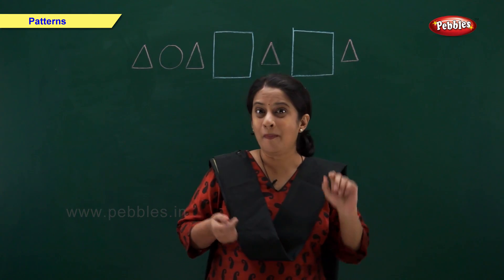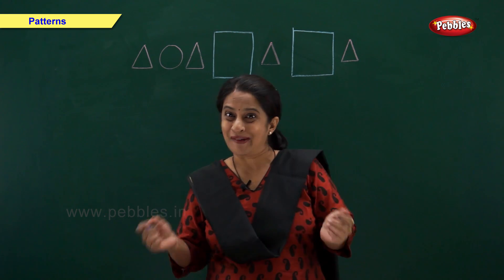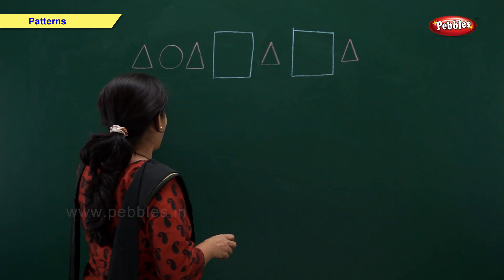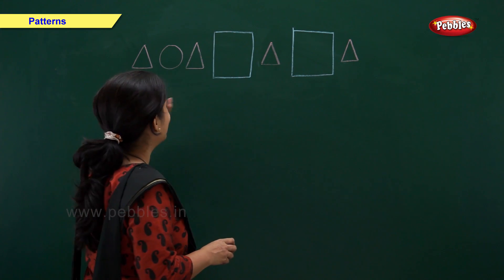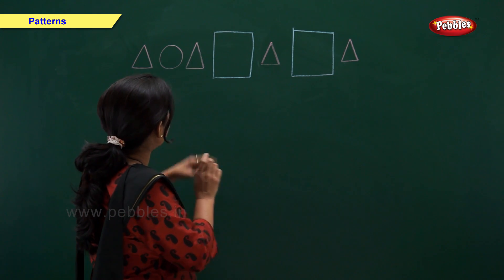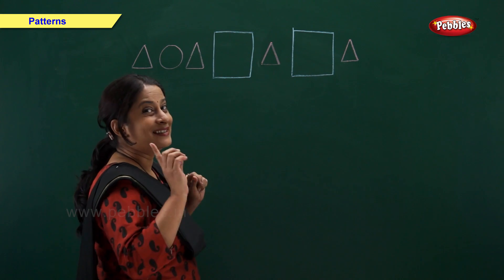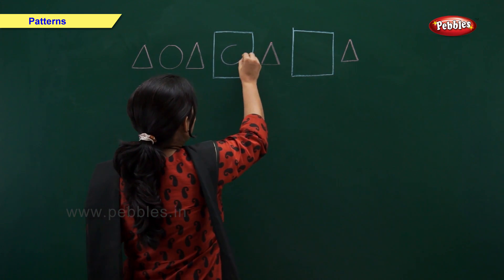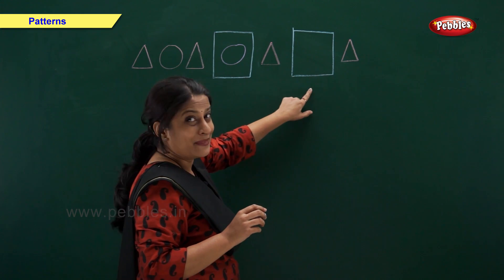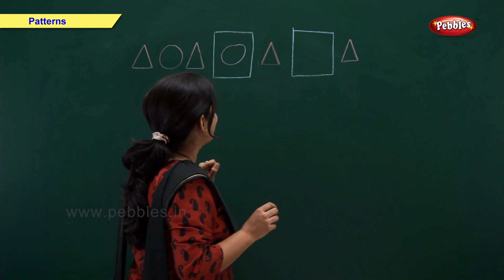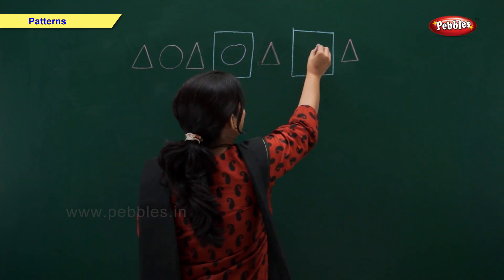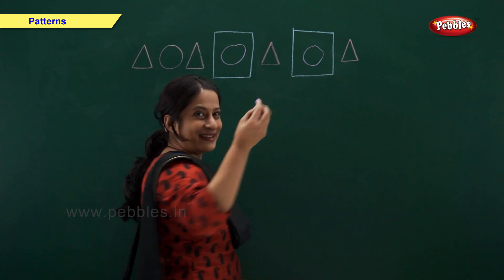I have one more pattern with missing shapes. So let's try and complete the pattern. This time I have a triangle, a circle, a triangle and a missing shape. So what comes after triangle? Circle. So let's draw a circle. Again we have a triangle and a missing shape and a triangle. So what comes after triangle? A circle. You are right. Isn't it easy?